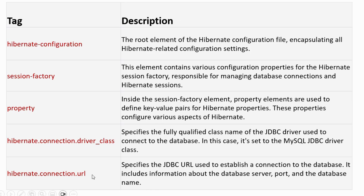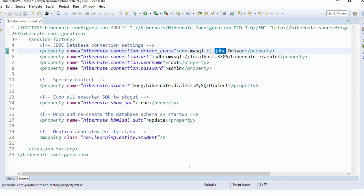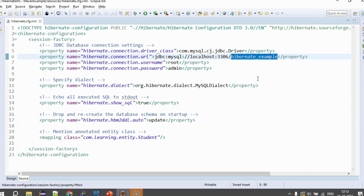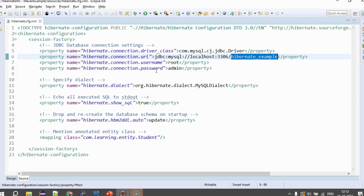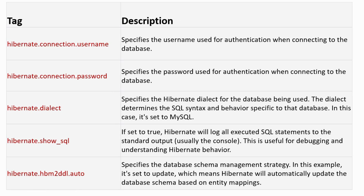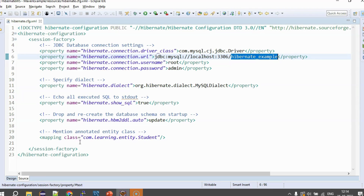The hibernate.connection.driver_class mentions the fully qualified class name of the JDBC driver — in our case the MySQL JDBC driver. The hibernate.connection.url helps connect to the database and also specifies the schema. Similarly, the username, password, and dialect tags each serve their defined role. You can pause the video here to go through each tag and its description, and note this down as reference notes for yourself.